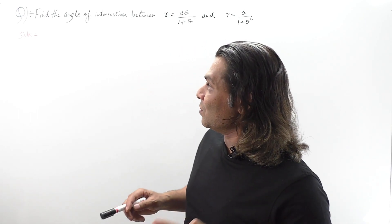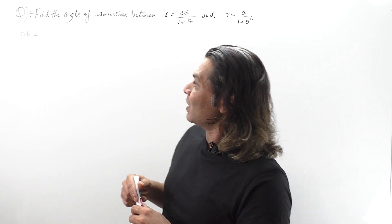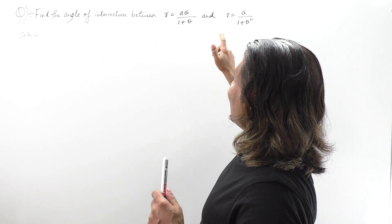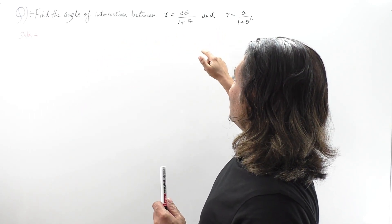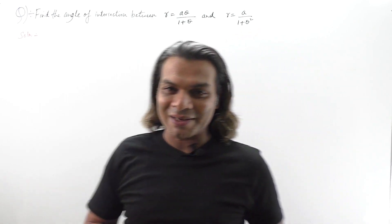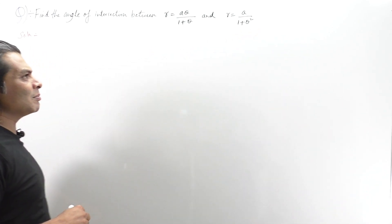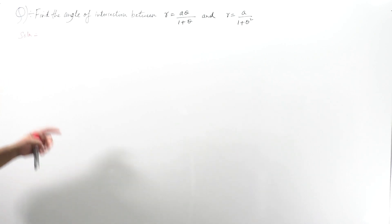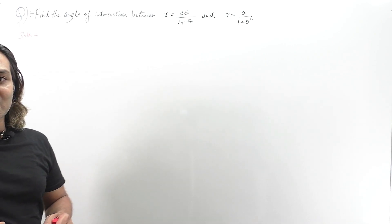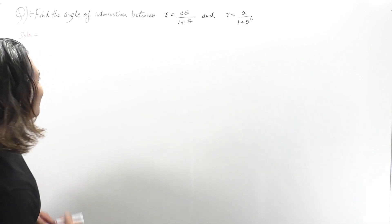Moving on to the next problems: find the angle of intersection between r = aθ/(1+θ) and r = a/(1+θ²). Before solving the problems, I want you to hit the subscribe button right now.